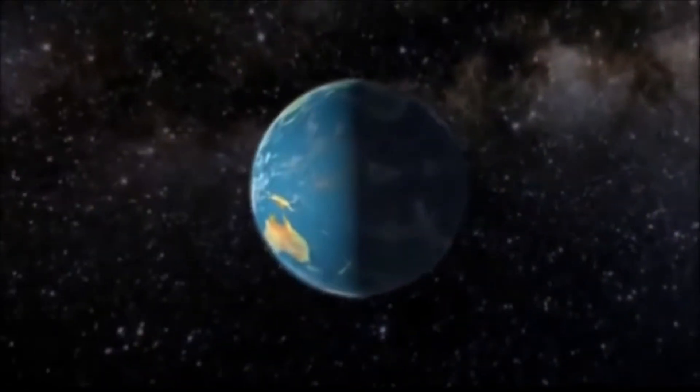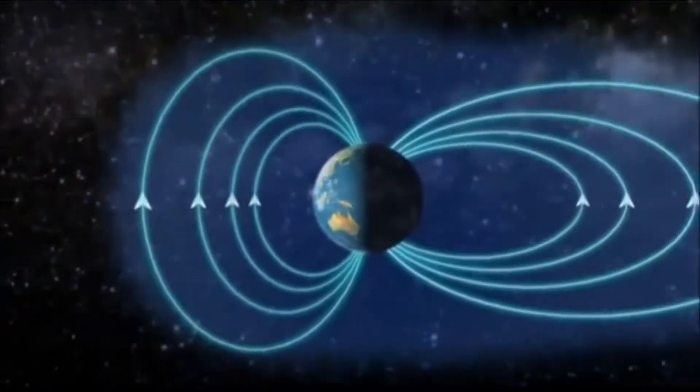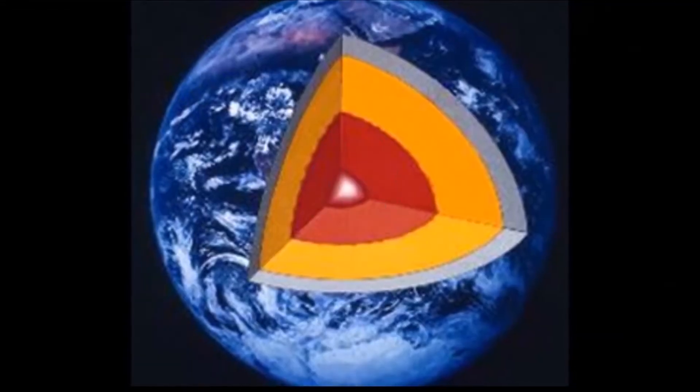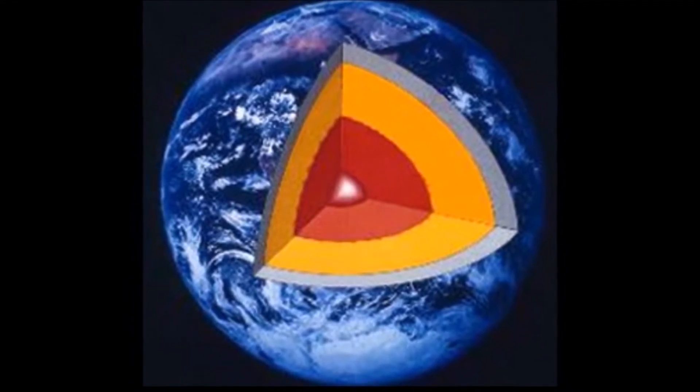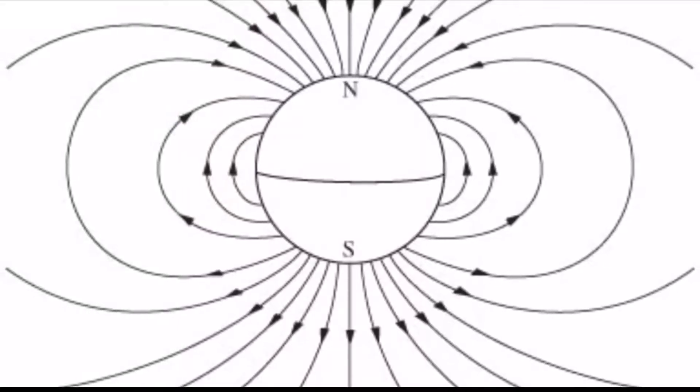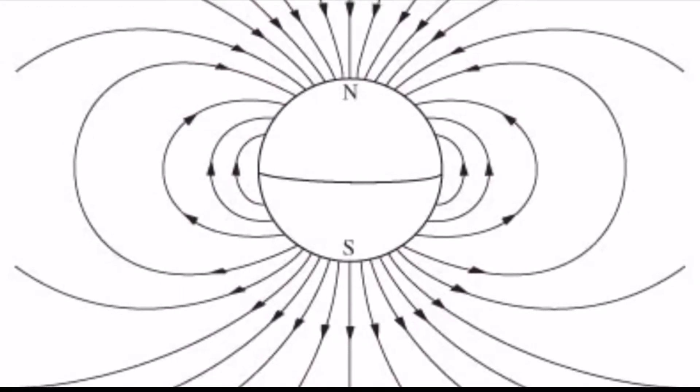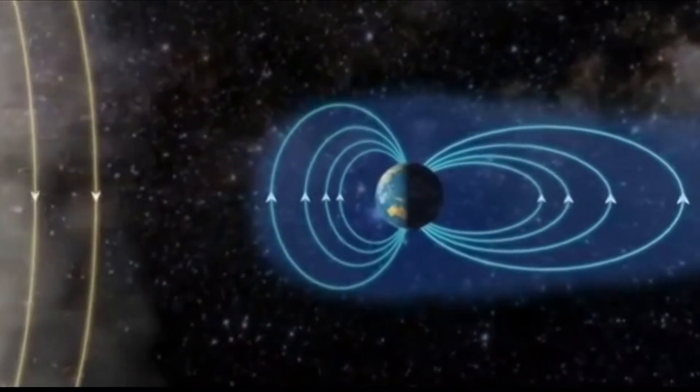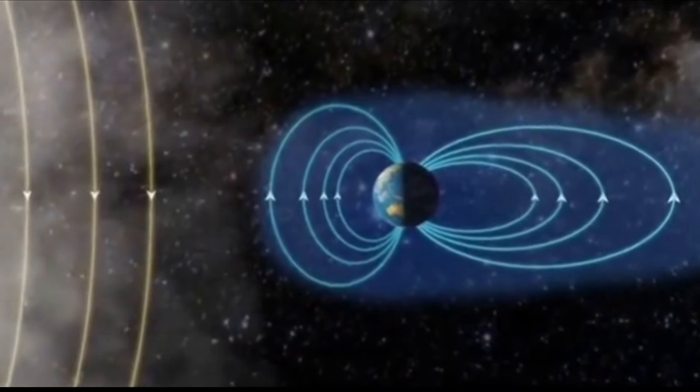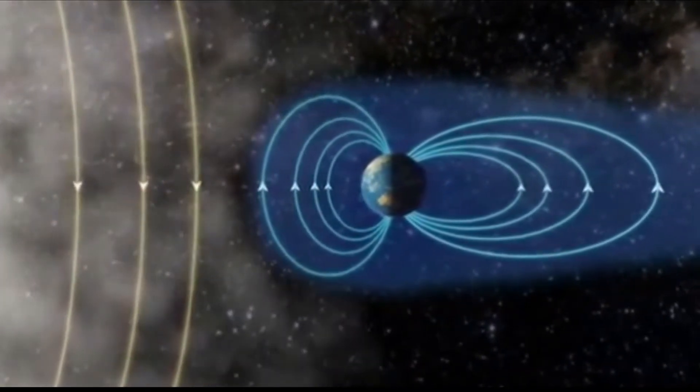But we're protected by our own magnetic field, the magnetosphere. You see, the Earth has a molten iron core that rotates quickly, turning it into a giant magnet with north and south poles. The magnetosphere deflects most of the sun particles, but some get through to our atmosphere near the poles.